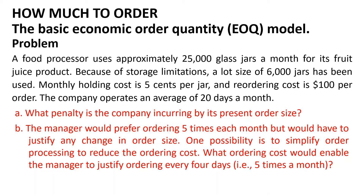What penalty is the company incurring by its present order size? The manager would prefer ordering five times each month but would have to justify any change in order size. One possibility is to simplify order processing to reduce the ordering cost. What ordering cost would enable the manager to justify ordering every four days, i.e. five times a month?